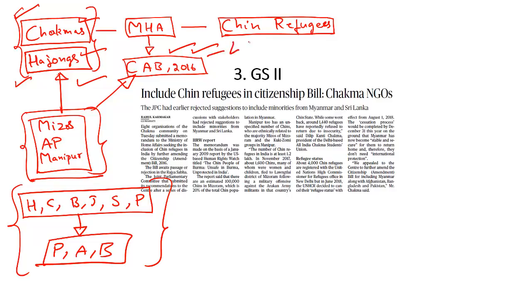The bill has been passed by the Lok Sabha and is currently pending in the Rajya Sabha. It has triggered massive controversy in the Northeastern parts of India because native tribes and local political organizations oppose provisions that would introduce refugees and migrants from these countries, altering the demography of the region. The issue of refugees and migrants has already led to socio-ethnic tensions in states such as Assam, Mizoram, and Tripura.